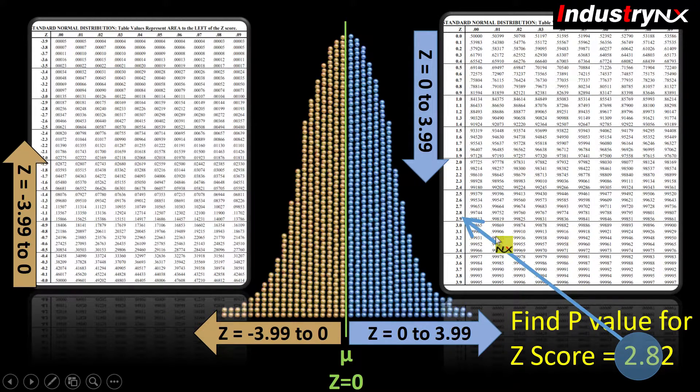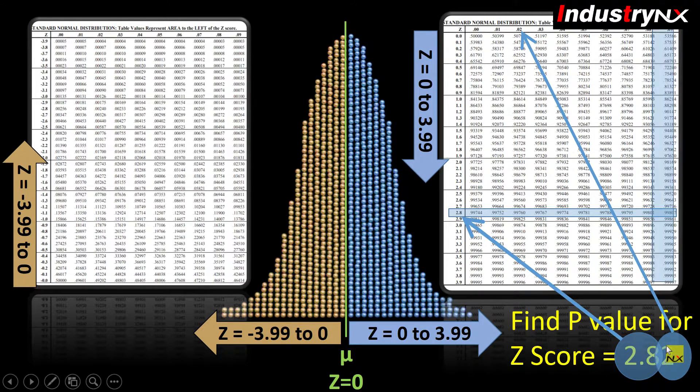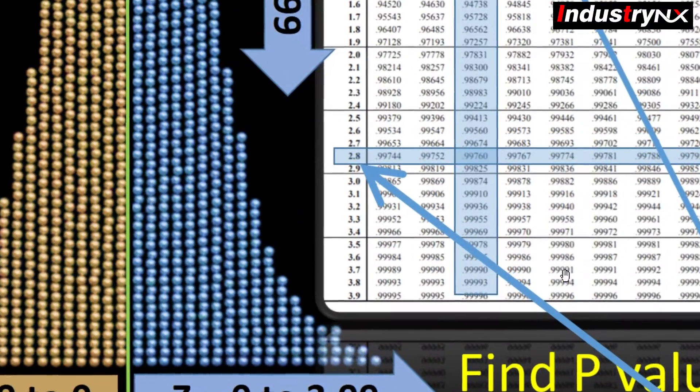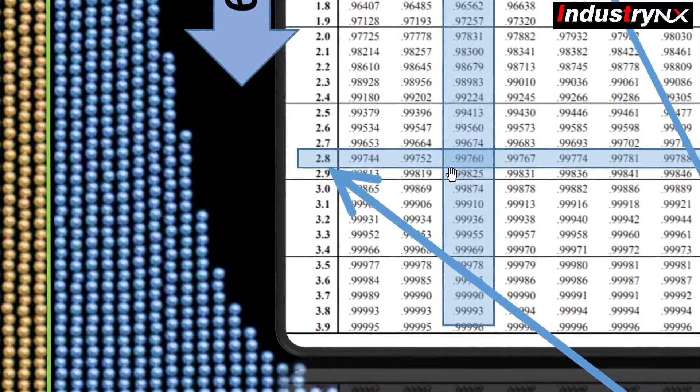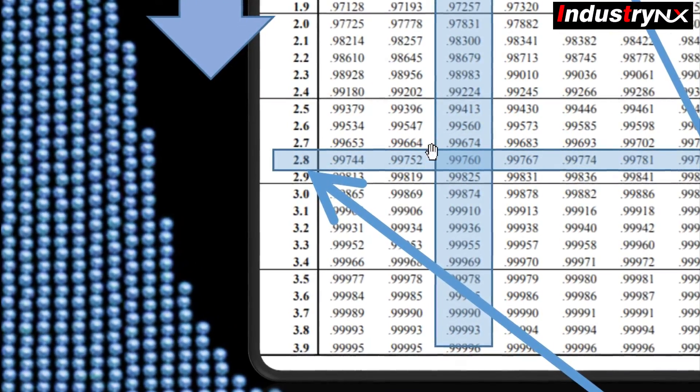Now look for z-score in first column up to tenths, that is 2.8, and hundredths place in top row, that is 0.2. Once you find these rows and column, then you need to find intersection values as shown, which is coming as